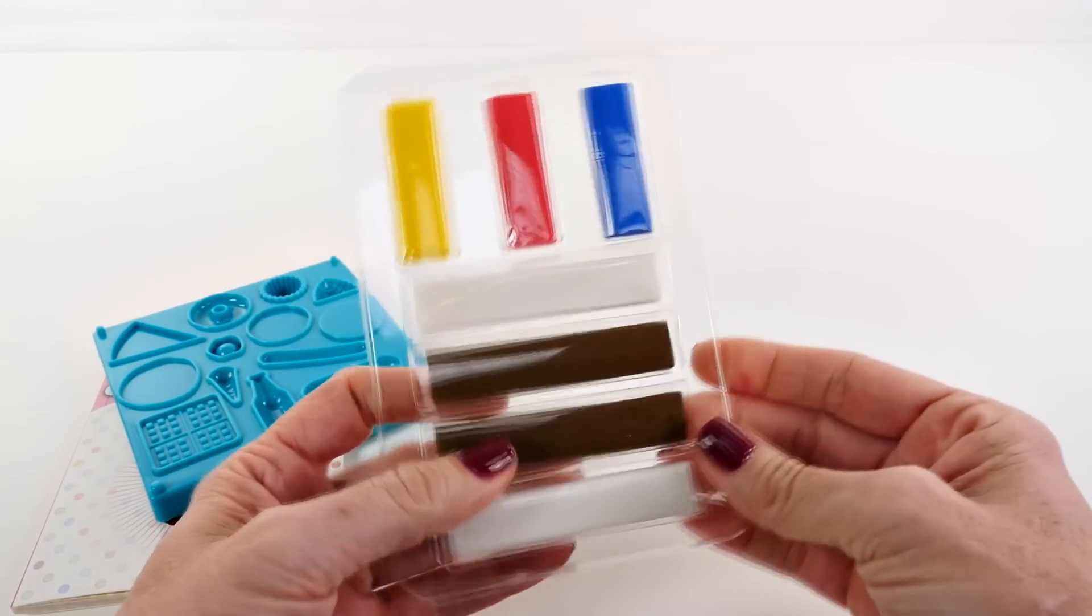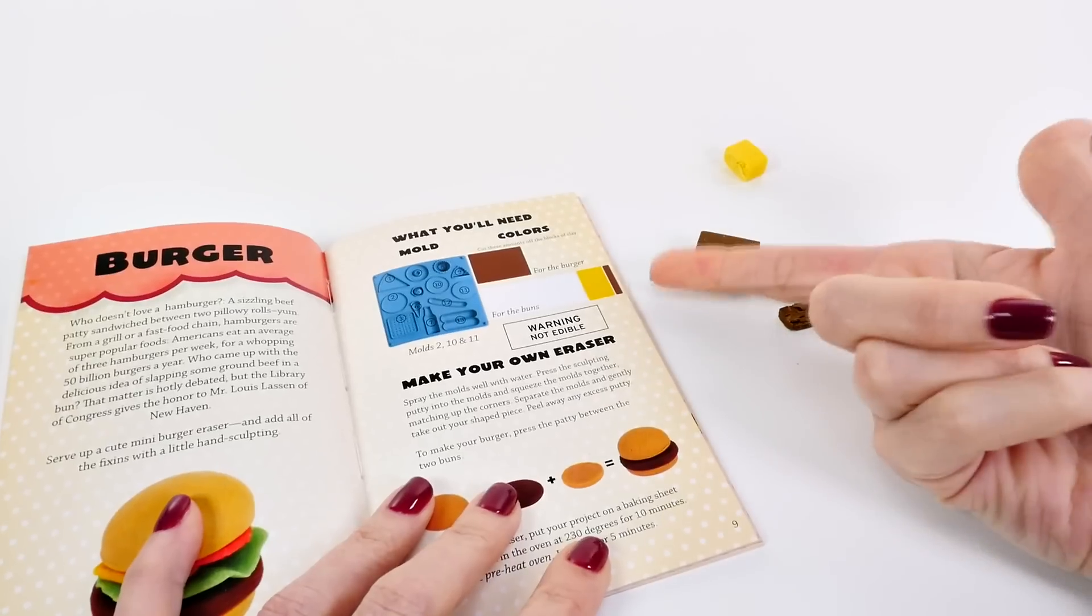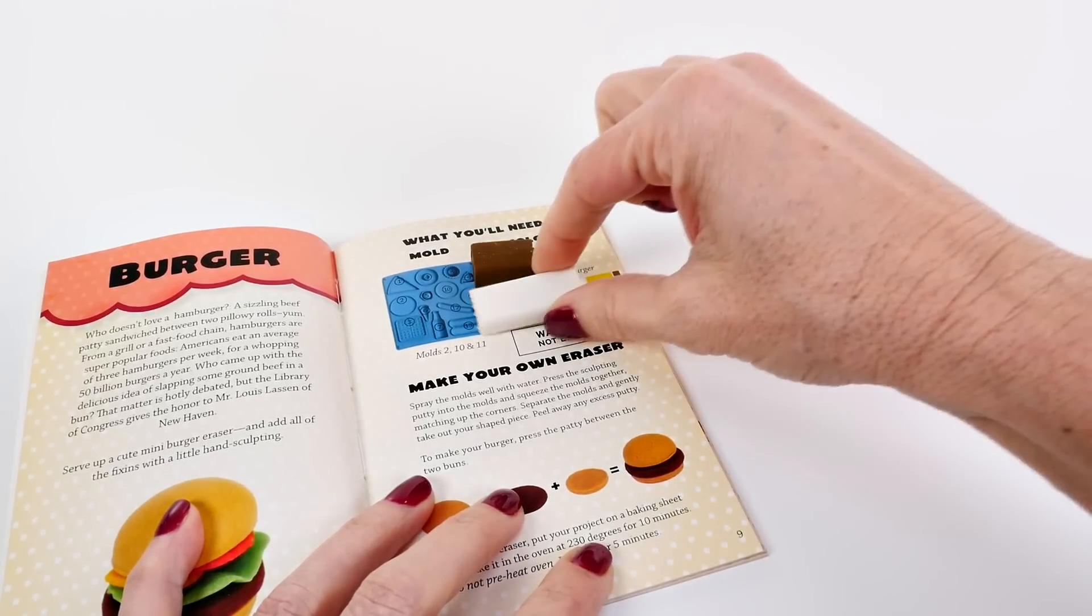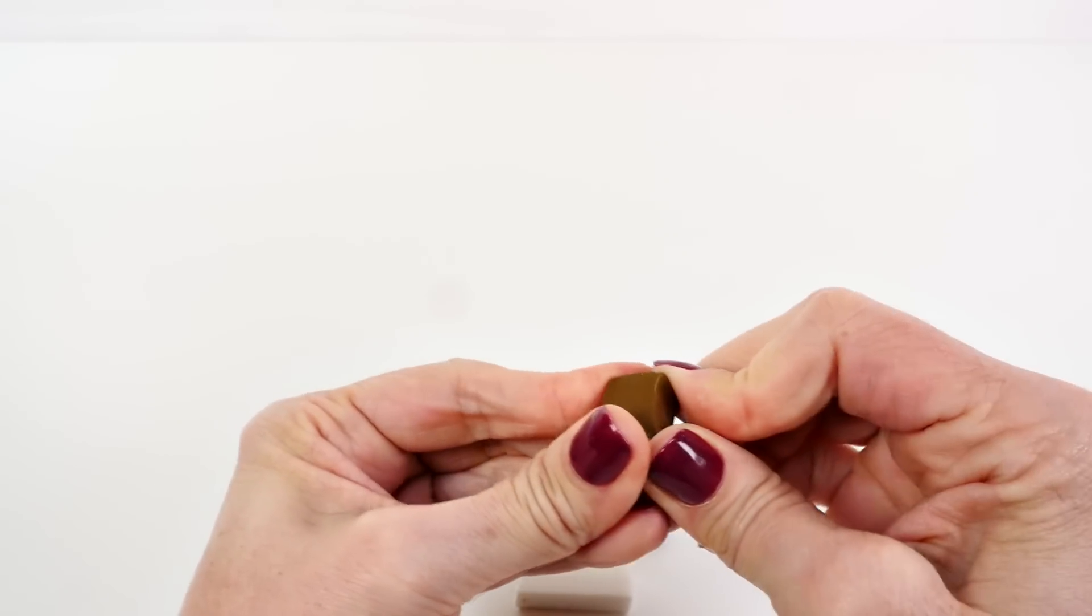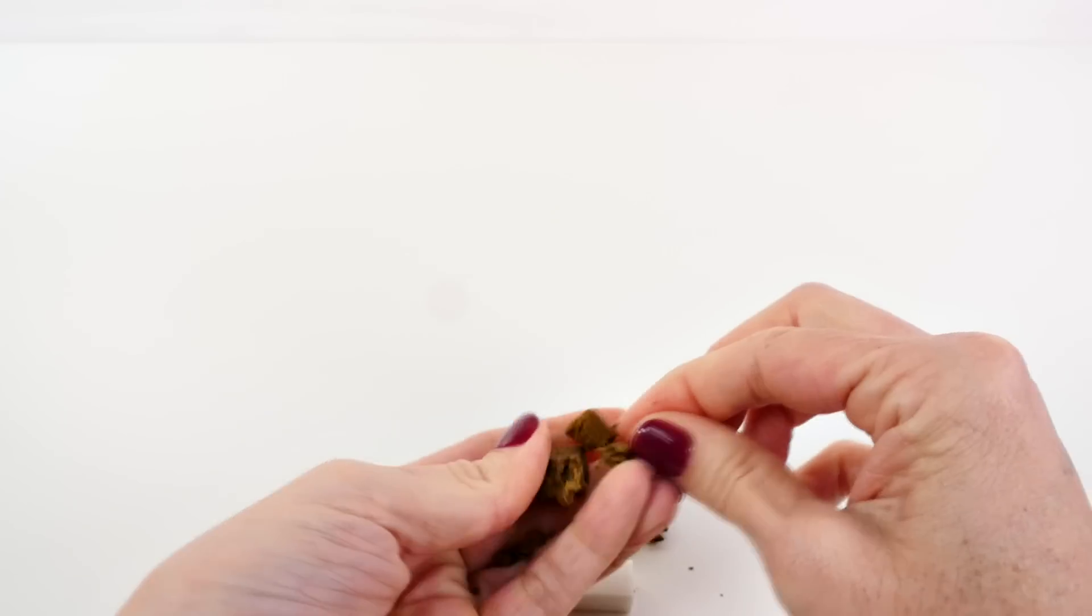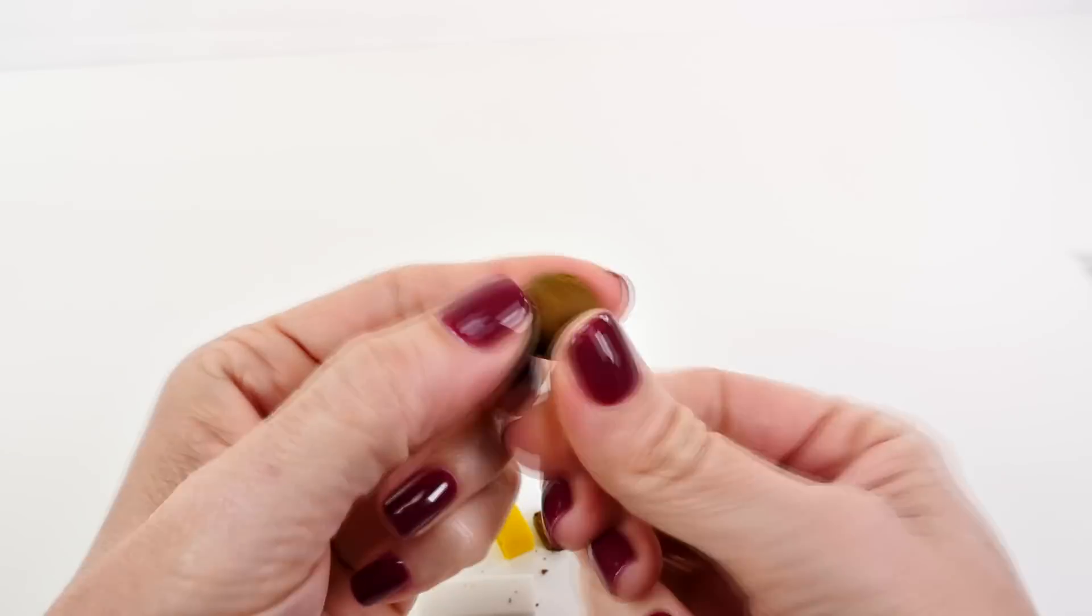We're going to start by making the burger. This is the guide that I use to cut off the right amount of clay. We're going to use the brown clay for the burger, and the first thing that we need to do is roll it into a little ball. This is hard!